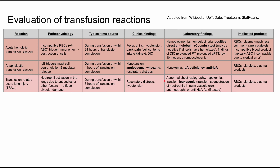Lab findings for TRALI include an abnormal chest x-ray, hypoxemia, and transient leukopenia. The leukopenia happens from transient sequestration of neutrophils in the pulmonary vasculature, so your white blood cell count might drop. You might also see anti-neutrophil or anti-HLA antibodies if you test for those, although these are not commonly tested. This can happen with all blood products — red blood cells, platelets, and plasma.